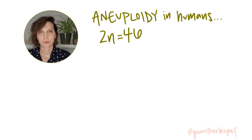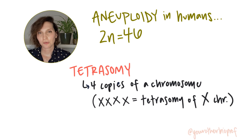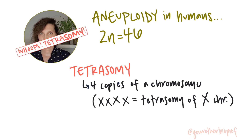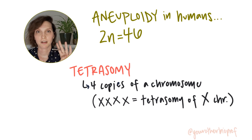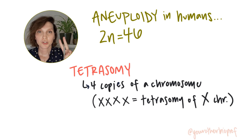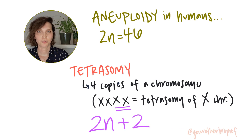Rarely, tetrasomy of the X chromosome occurs. How many total chromosomes would be present in a somatic cell of an individual with tetrasomy of the X chromosome? Pause the video if you need to think about it. Tetrasomy of the X chromosome would mean four copies of the X chromosome — that's two more sex chromosomes than we would typically expect to find. So 2N plus two equals 48.